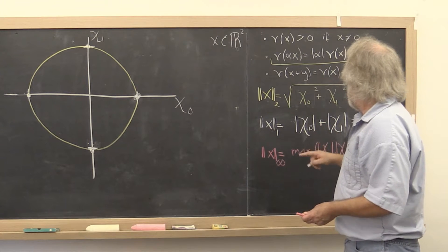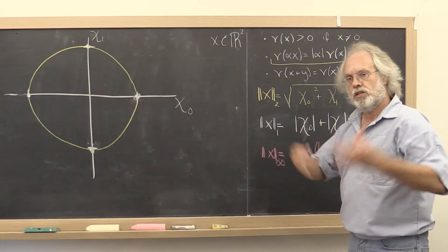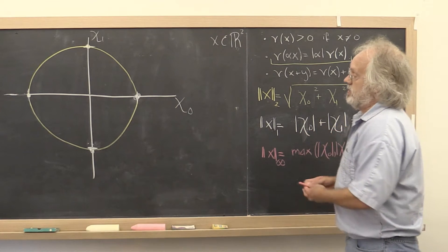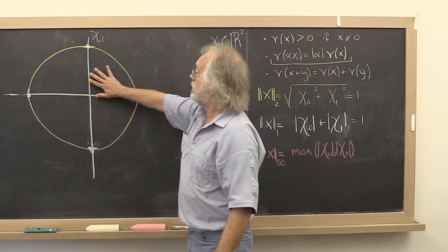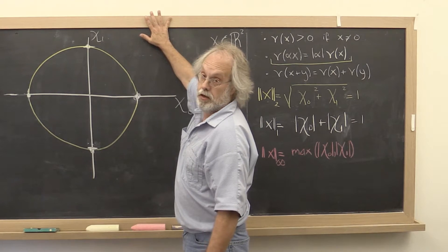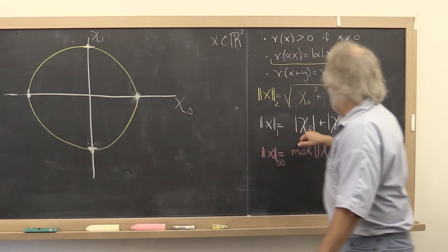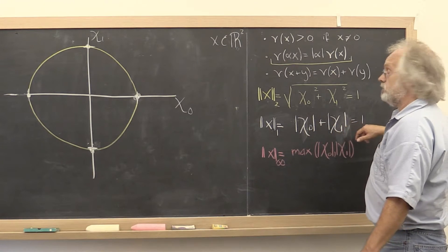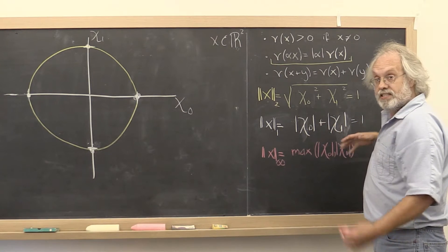Now, absolute value. Always a little bit difficult to deal with. Well, if we know that chi0 and chi1 are positive, in other words, if we ask the question, what points in this quadrant are in this set, then this becomes the set chi0 plus chi1 is equal to 1, which we recognize as a line.